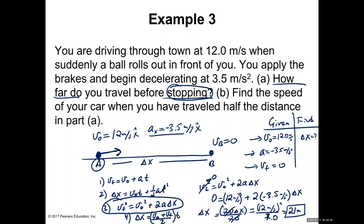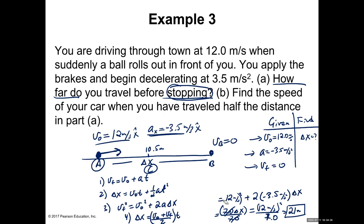Part B asks for the speed when the car has traveled half the distance from Part A. Half of 21 meters is 10.5 meters. Let's call this intermediate point C. We go from A to C — same initial velocity, same acceleration — but now the car has not yet stopped. The final velocity at C is unknown and definitely not zero.